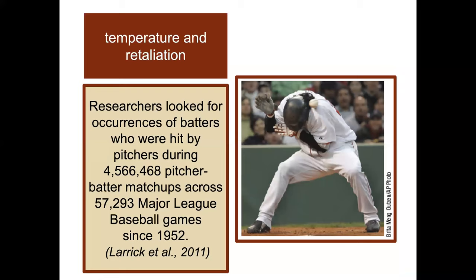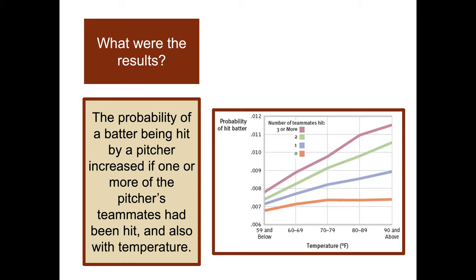Regarding temperature and retaliation: researchers looked for occurrences of batters hit by pitchers during 4,566,468 pitcher-batter matchups across MLB games since 1952. The results showed that the probability of a batter being hit by a pitcher increased if one or more of the pitcher's teammates had been hit, and it also increased with increasing temperature.